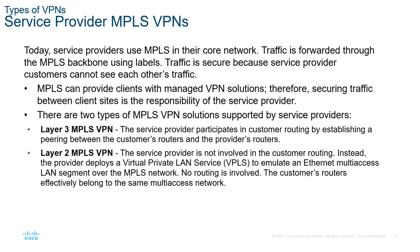For service-provider VPNs using MPLS, we can have a layer 2 MPLS VPN called Virtual Private LAN Service, or VPLS. This emulates an Ethernet multi-access LAN segment over MPLS using switching technology — no routing is involved. We are essentially extending the LAN between two locations so they are all part of the same multicast access network.